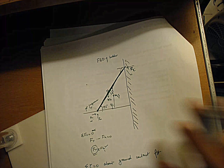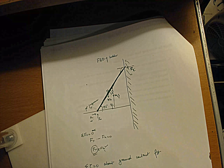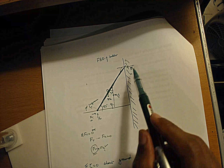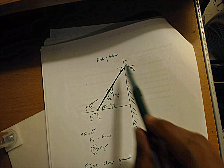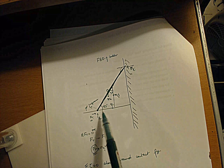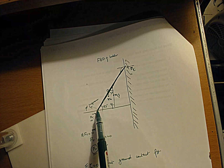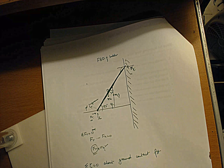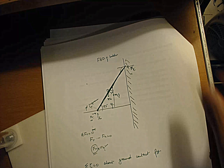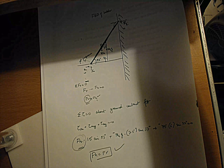To recap: first, draw the free body diagram with all forces — normal force from the frictionless wall, frictional force from the floor, normal force from the floor, weight of the ladder, and weight of the kid. Then use sum of all forces in x equals zero to get FR equals FH. Finally, use sum of torques about the ground contact point — three unknowns become one — solve for FH, and that gives you FR.